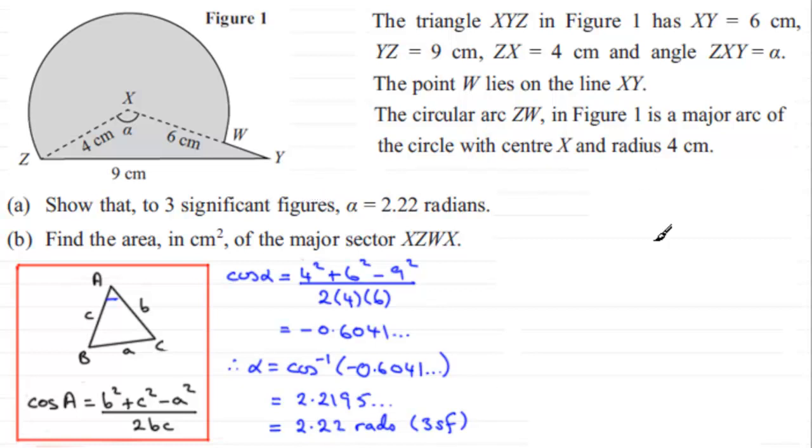Okay, so that's then Part A. Now, in Part B, we've got to find the area in centimetres squared then of the major sector XZWX. So this is this portion just in here.